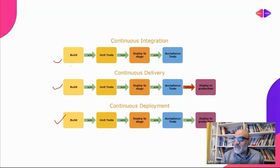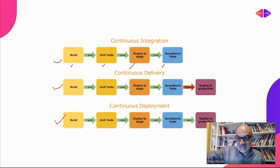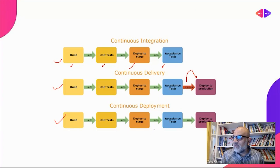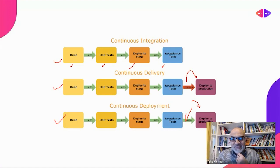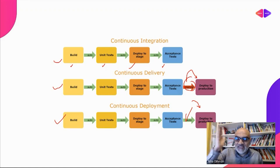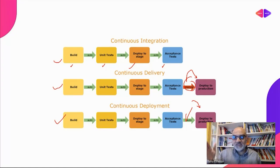Continuous integration starts by building packages, doing testing, deploying to staging, and doing acceptance testing. What's the difference with continuous delivery? That is another step — there is a manual step before going to production, and it is a business decision. They will make a business decision — not a technical one — to decide whether to deliver to production or not.